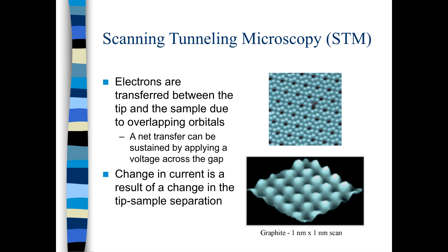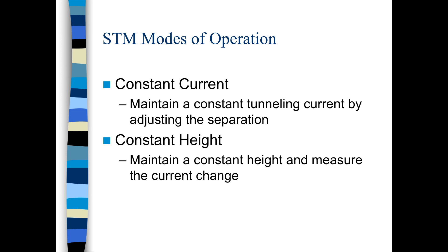Change in current is a result of a change in the tip-sample separation. The tip and sample operate in two modes: constant current and constant height. In constant current mode, a constant tunneling current is maintained by adjusting the separation — the current is kept constant and the height is varied. In constant height mode, the tip maintains a constant height and measures the current change. These two modes are almost interrelated to each other.